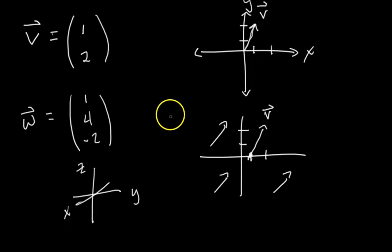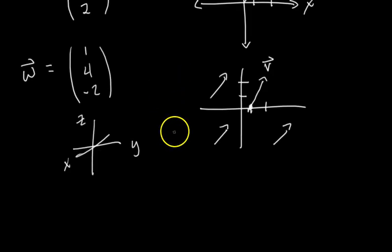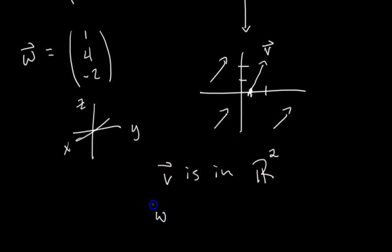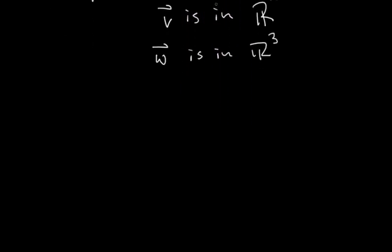In linear algebra, we have a fancy way of referring to something like two-dimensional space, three-dimensional space. And so we would say V, since it has two components, we say V is in this fancy R with a superscript 2. So you read the sentence, V is in R2. And literally all you can interpret this to mean is that the vector V has two entries. And then similarly, you would say W is in R3. Where R3 just means three-dimensional space. So now we know what a vector is.